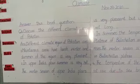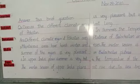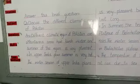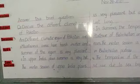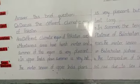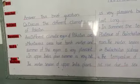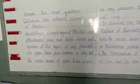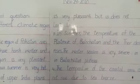The next point is the Upper Indus Plain, which is divided into two parts: the Lower Indus Plain and the Upper Indus Plain. The climate of the Upper Indus Plain is very hot in summer, but the winter season of the Upper Indus Plain is very cold, though it does not snow.